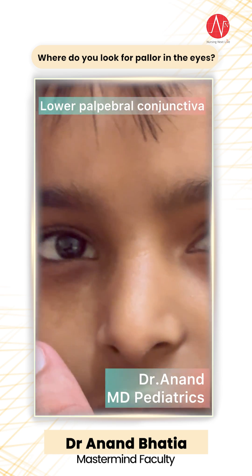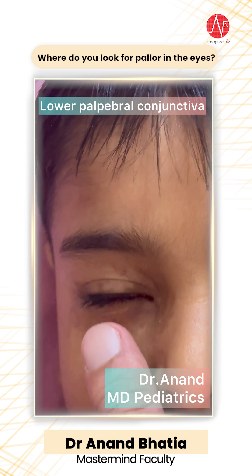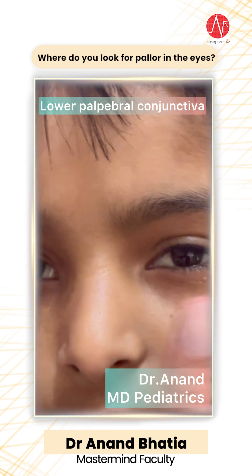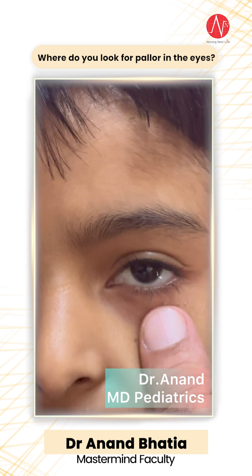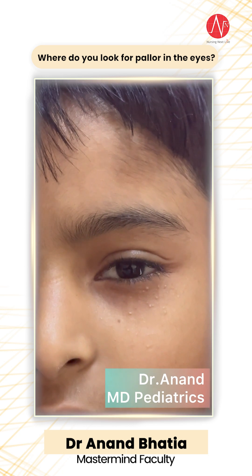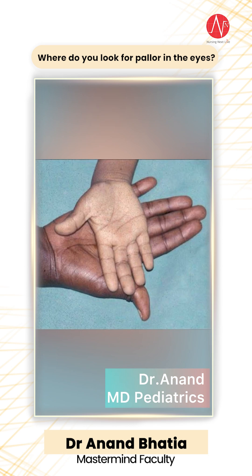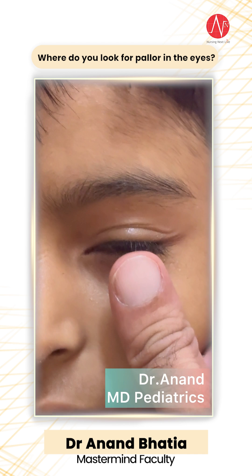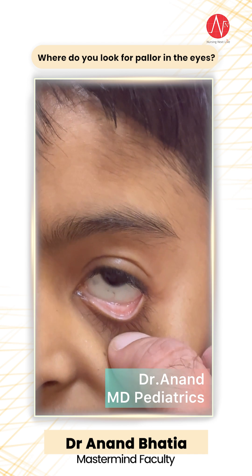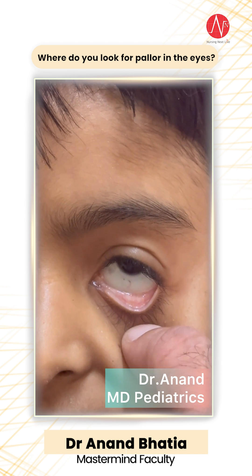You can also look at the oral mucosa, skin, and nail beds. One very important site is the palmar and plantar creases. As shown in the picture, you compare the patient's hand with the examiner's hand — that is how you look for pallor. Thank you everyone, please take care.